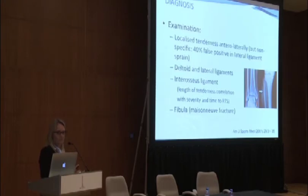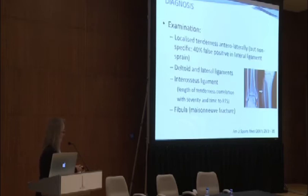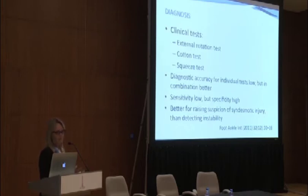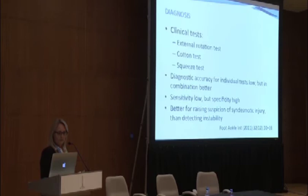We should never forget about the fibula, because with significant syndesmosis injuries you can get a rupture through the deltoid ligament with forces being transmitted up the interosseous membrane and then out of the fibula at the proximal end. Several clinical tests have been described — the external rotation test, the cotton test, and the squeeze test — but unfortunately none of these on their own are accurate. In combination they are better, but individual accuracy is quite low. Of those, the external rotation test is probably the most reliable, with low sensitivity but high specificity. So it's about raising the suspicion rather than making a final diagnosis.